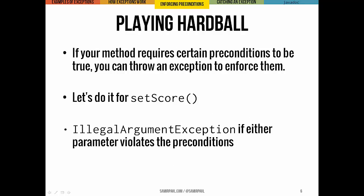We saw in the last lecture one way to approach enforcing preconditions — making sure that inputs either to a method or from the user via scanner actually meet the preconditions that we've set. Using exceptions to do this enforcement is a little bit more of an aggressive way to handle it. So we're going to take a look at what it would look like to use exceptions to enforce the preconditions for setScore just as we saw in the last lecture. We're going to throw an illegal argument exception if either parameter violates our preconditions.